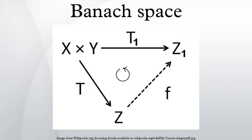If X is a normed space and K the underlying field, the continuous dual space is the space of continuous linear maps from X into K, or continuous linear functionals. The notation for the continuous dual is X* = B(X, K) in this article. Since K is a Banach space, the dual X* is a Banach space for every normed space X.